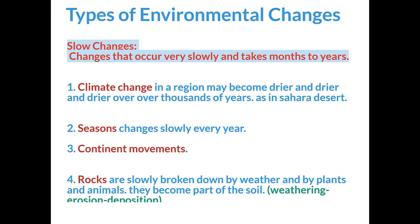Slow changes occur very slowly and they take from months to years. First, climate change — a region may become drier and drier over thousands of years, as in the Sahara Desert. Secondly, seasons change slowly every year. We also talk about continent movements, and rocks that are slowly broken down by weather, wind, water, plants, and animals — these rocks become part of the soil through weathering, erosion, and deposition of sediments.